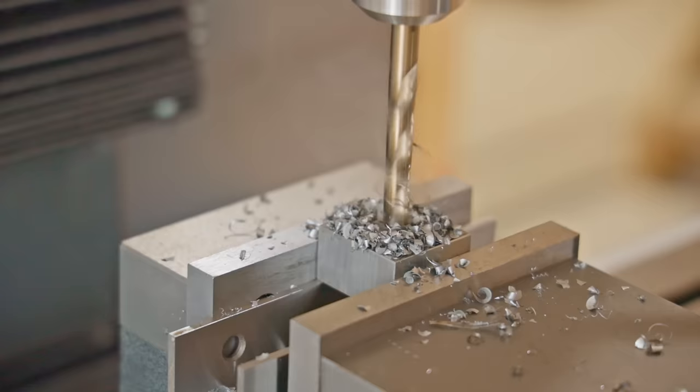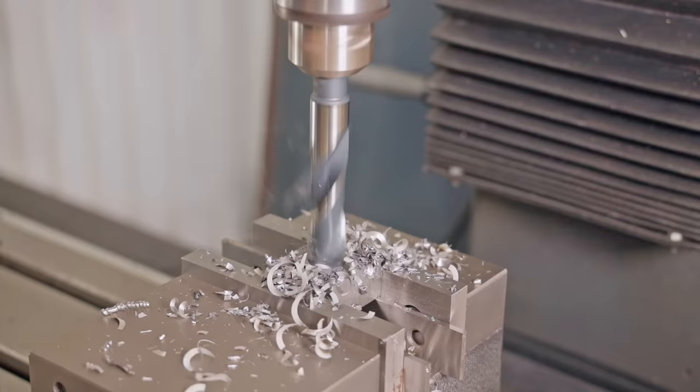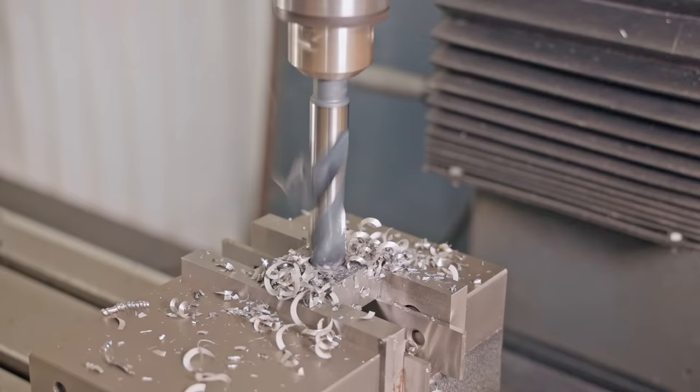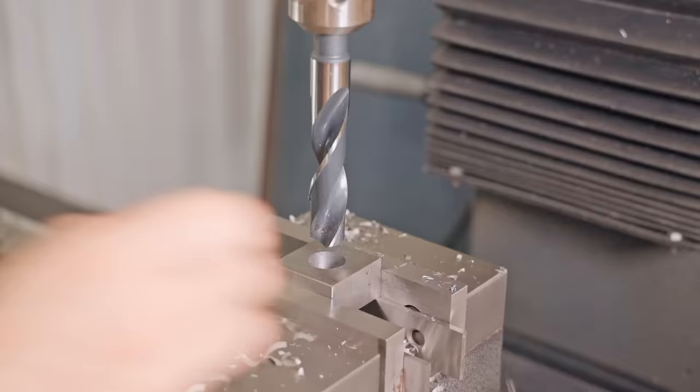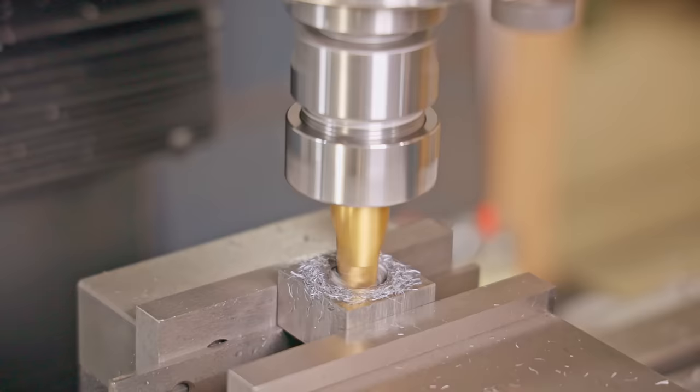I'll drill a through hole and from there I can file out the logo and as much as I like filing I don't fancy going all the way through that block so I'll remove some material from the back by drilling out to recess. This 18mm bit is the largest drill I have and it's not quite large enough so I'll finish the recess with a 20mm end mill.